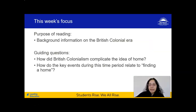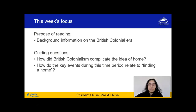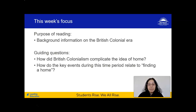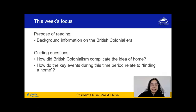As a reminder, we've spent the last few lessons reading and analyzing A Changing World to learn more about the British colonial era. This helps us better understand the author's point of view in other texts we'll be reading over the next few weeks. There are two guiding questions to keep thinking about today: first, how did British colonialism complicate the idea of home? And second, how did the key events during this time period relate to finding a home?